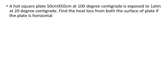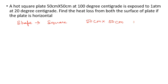A hot square plate of 50 cm × 50 cm at 100°C is exposed to air at 1 atmosphere at 20°C. Find the heat loss from both surfaces of the plate if the plate is horizontal. The shape is a square, dimension is 50 cm × 50 cm. T_surface = 100°C and T_surrounding = 20°C.